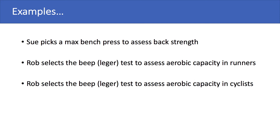The third example is Rob selects the BEEP or Leger test to assess aerobic capacity in cyclists. Yes, the BEEP test does assess aerobic capacity, but for cyclists, it's not the best mode of testing — cyclists usually cycle. So a bike-based test would be more applicable and more valid to assess aerobic capacity in cyclists. A bike-based aerobic assessment would be more accurate and more valid for this population.